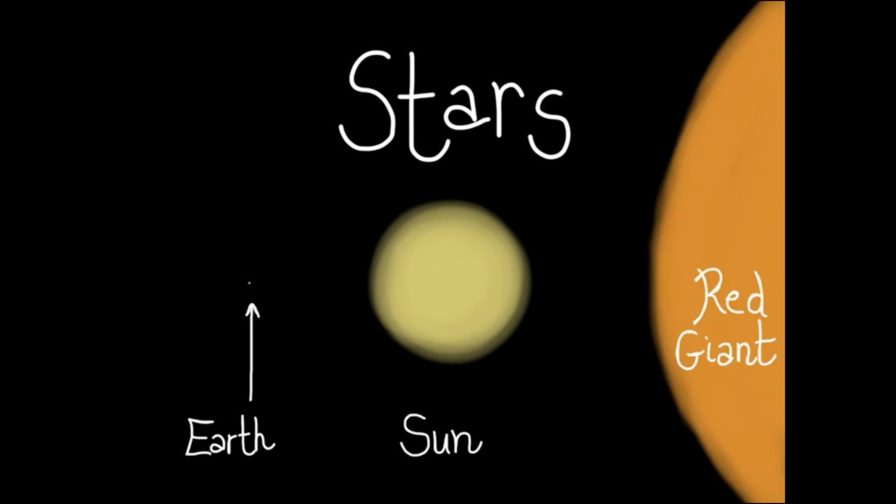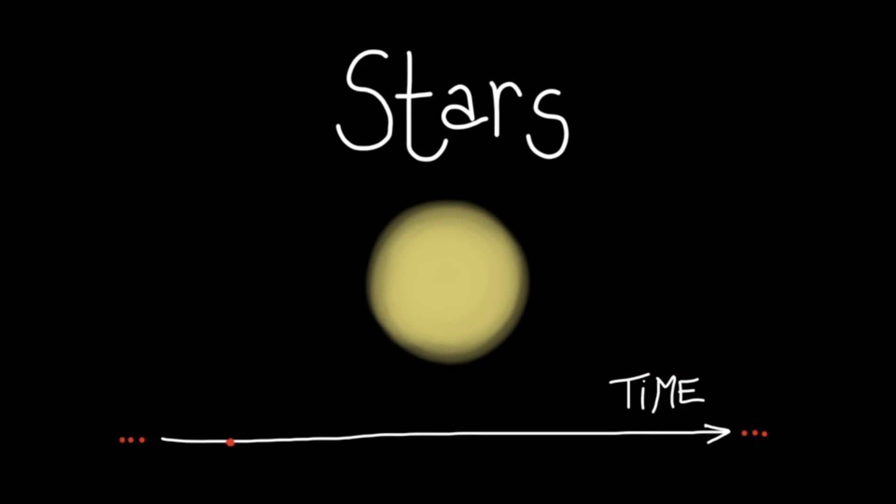Stars are born, they live and die just like us. But they are much bigger. They are giant spheres of gas. Our own star, the Sun, has a volume of more than a million times the Earth. But compared to some others, it is just an average star. Stars are not only bigger, they also live much longer. A human lifetime of say 90 years is just a blink for a star. Stars can live millions to billions of years.